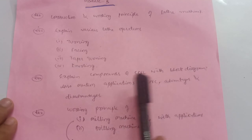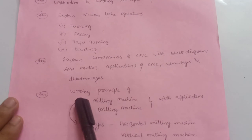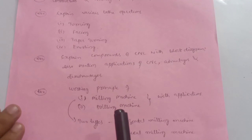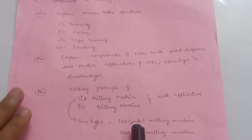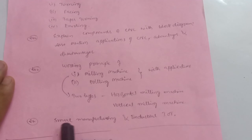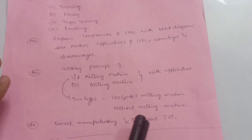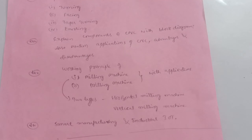Try to understand these lathe operation concepts in your own language. You can watch animation videos for lathe operations to understand the concepts and then write the procedure in the examination. Next, explain components of CNC with a block diagram — most important — and also mention applications, advantages, and disadvantages of CNC. Next, working principle of milling machine and drilling machine; there are two types: horizontal milling machine and vertical milling machine — either one can appear in the examination.